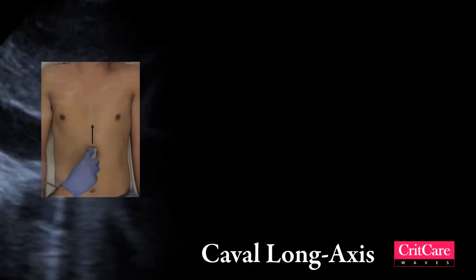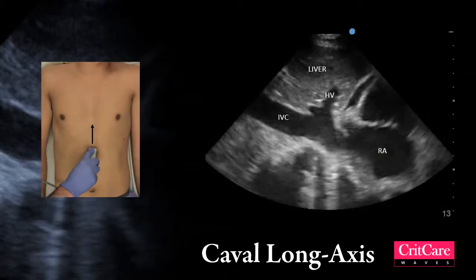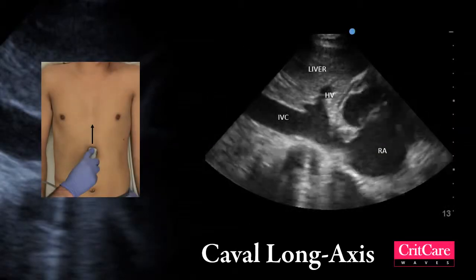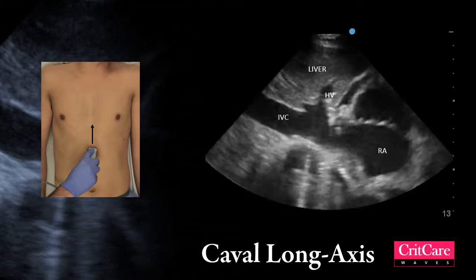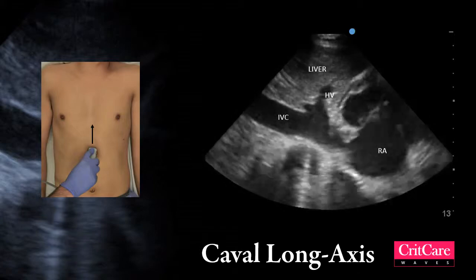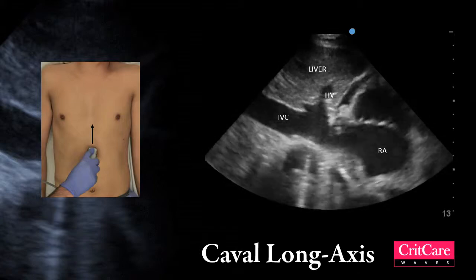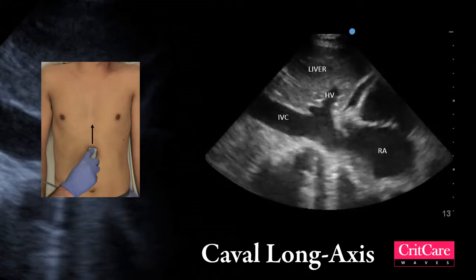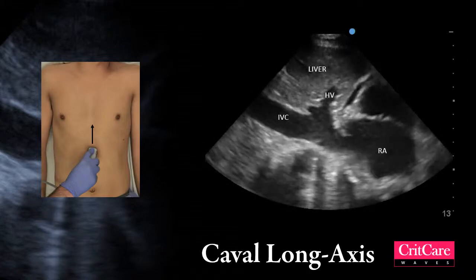Quick recap on the anatomy. The IVC and the hepatic vein drain into the right atrium. We usually measure the IVC about 2 centimeters proximal to the cavoatrial junction, or right before the offtake of the hepatic vein.